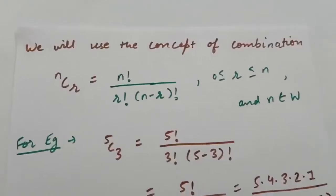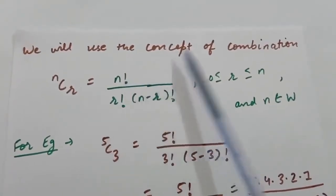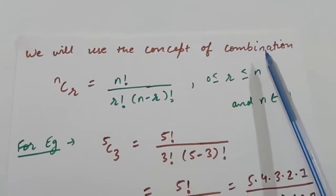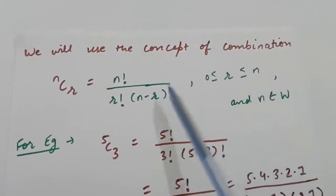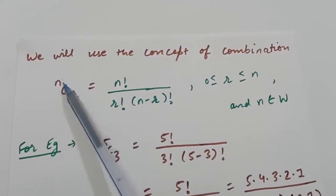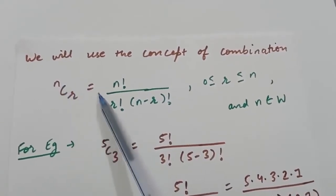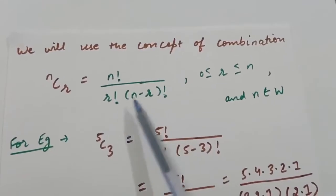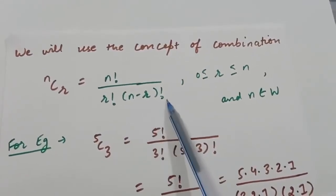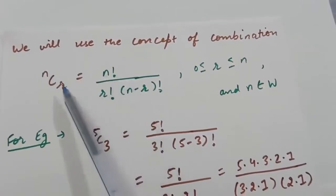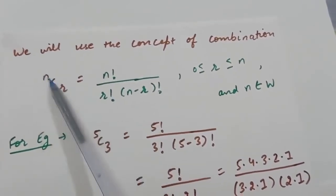In this chapter we will also use the concept of combinations; you will study more about combinations in chapter 7. In this chapter you just have to learn this formula: nCr = n! / (r! × (n−r)!).